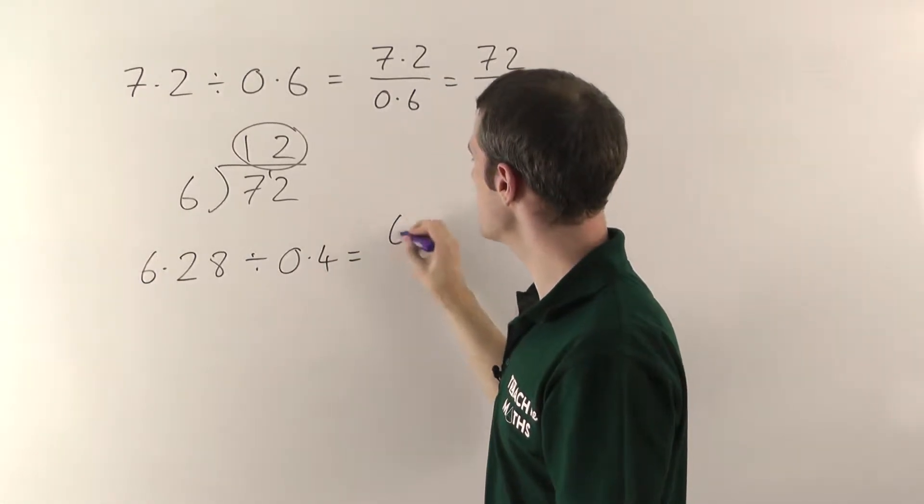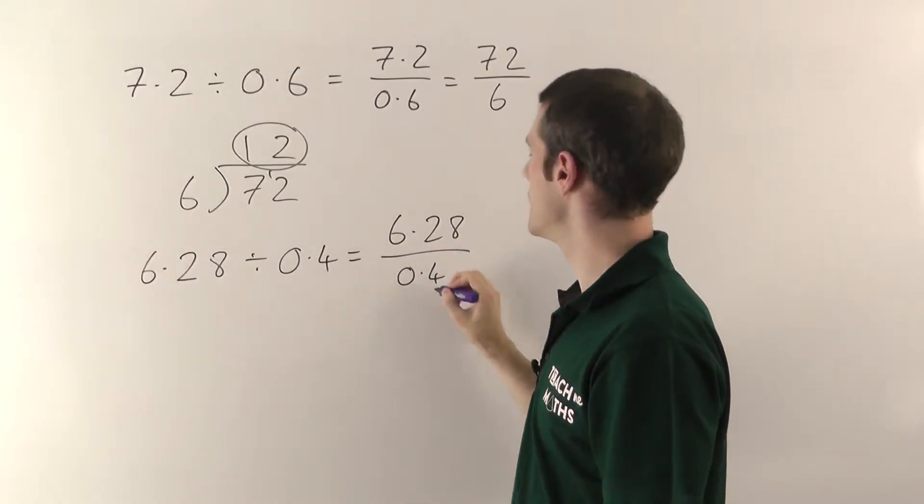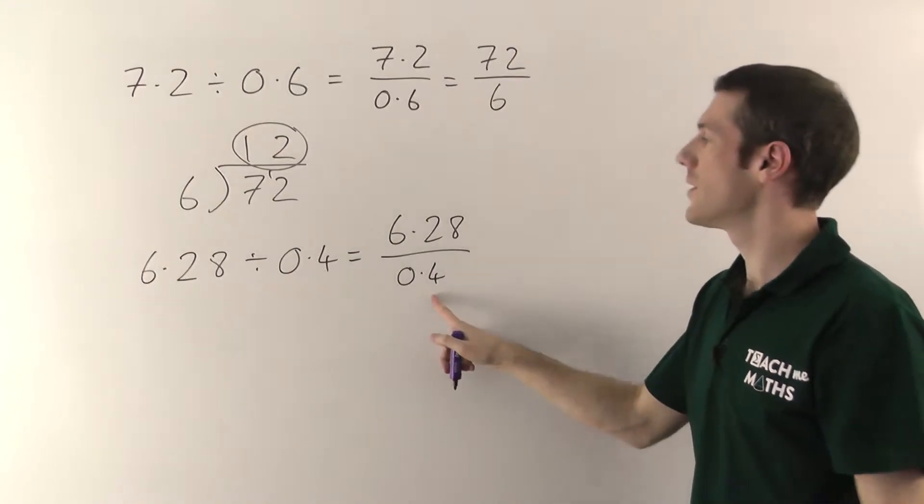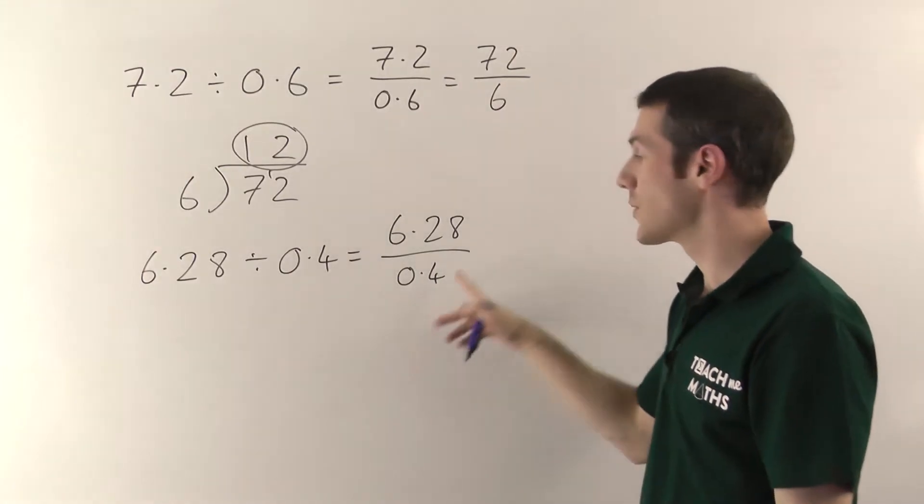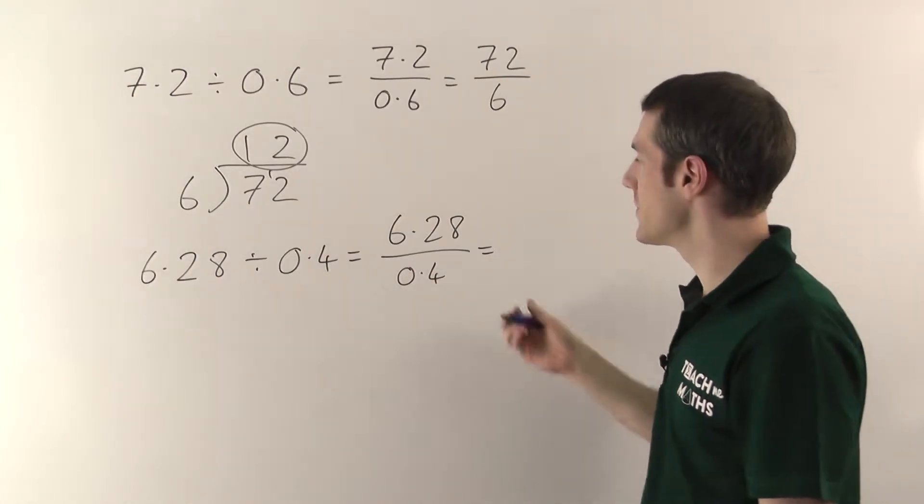Again, you write it as a fraction. So 6.28 divided by 0.4. And we want to make the number on the bottom a whole number. So again, we times the top and bottom by 10. And you just keep timesing by 10 until eventually you get whole numbers. In this case, we only need to do it once.